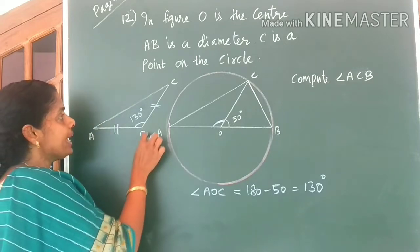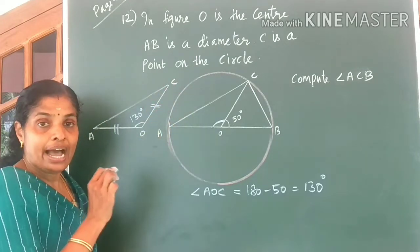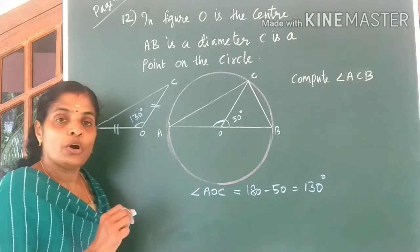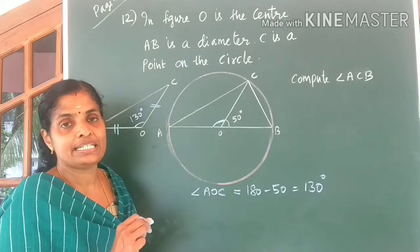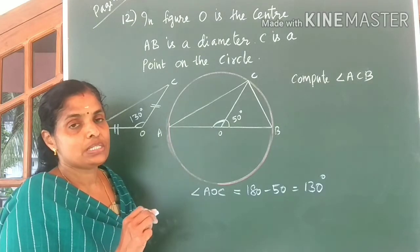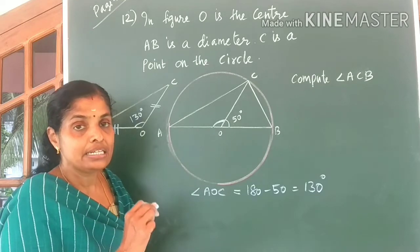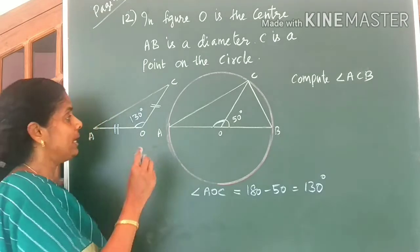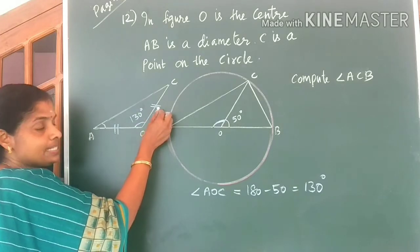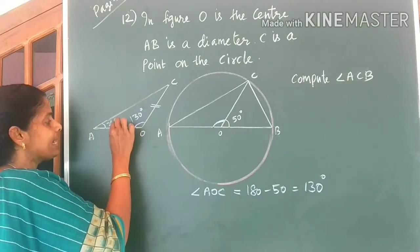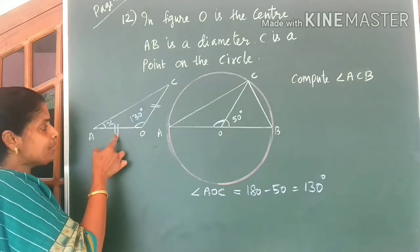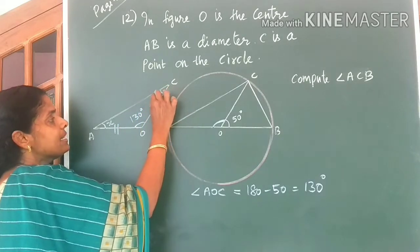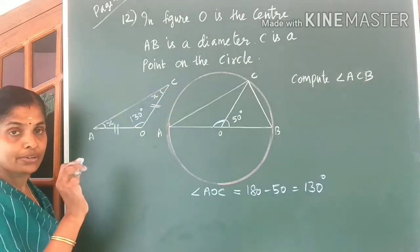What do you know about an isosceles triangle? In an isosceles triangle, angles opposite to equal sides are equal. So opposite to this side, I am marking the angle as X. Opposite to this side, I can mark this angle as X. Okay.